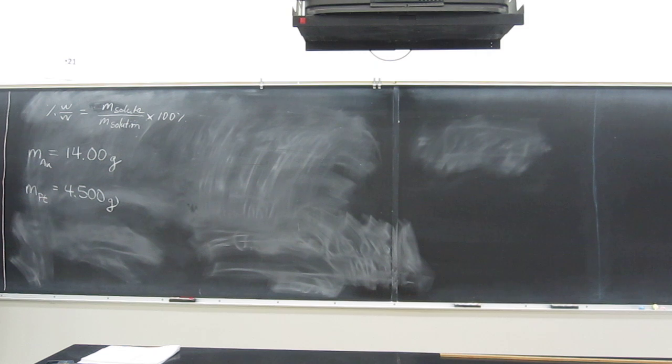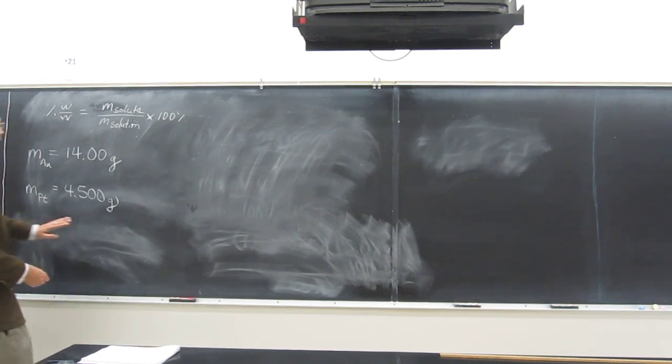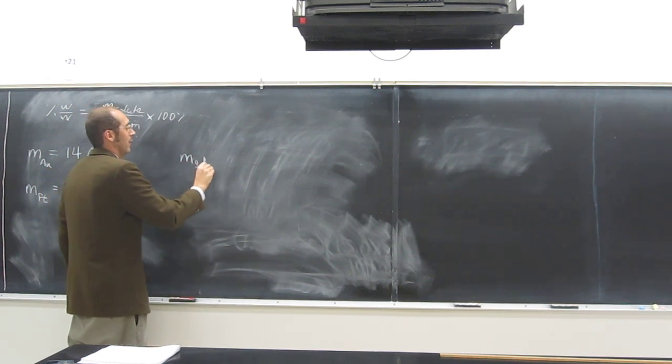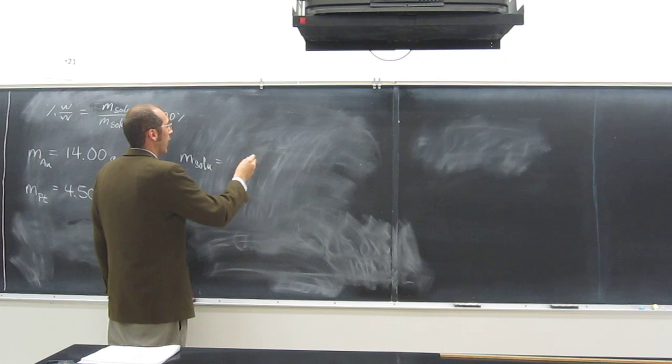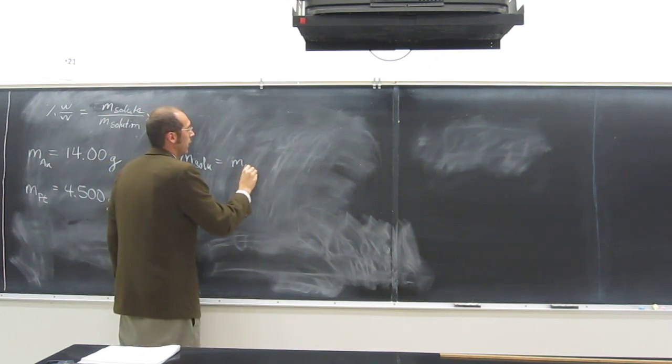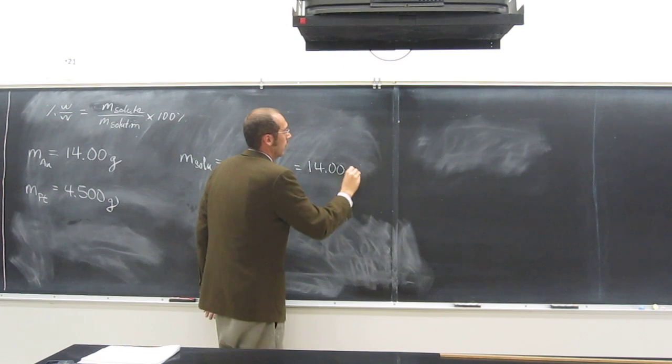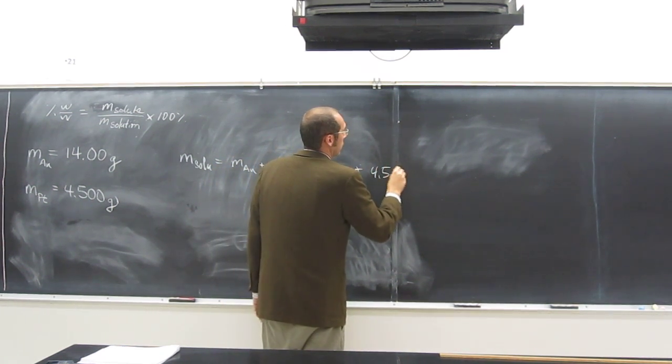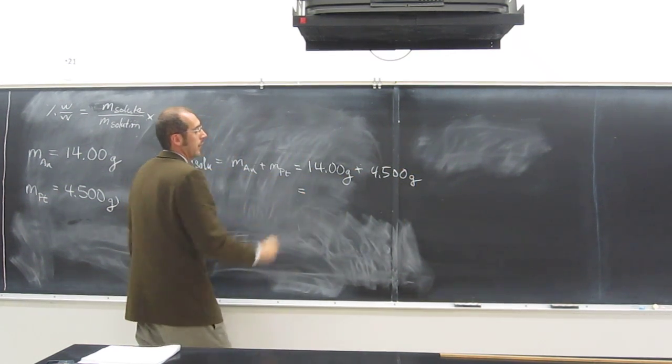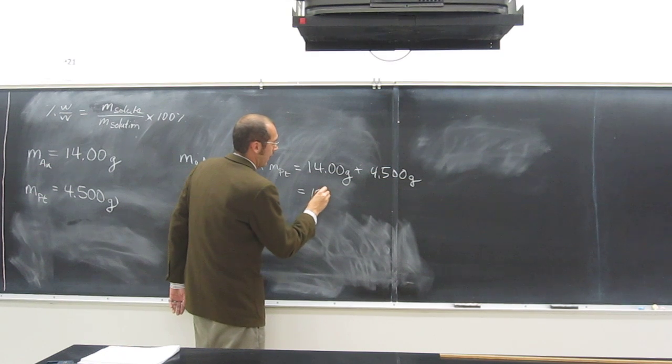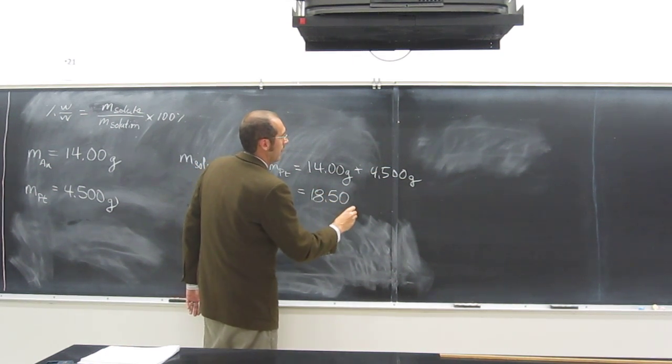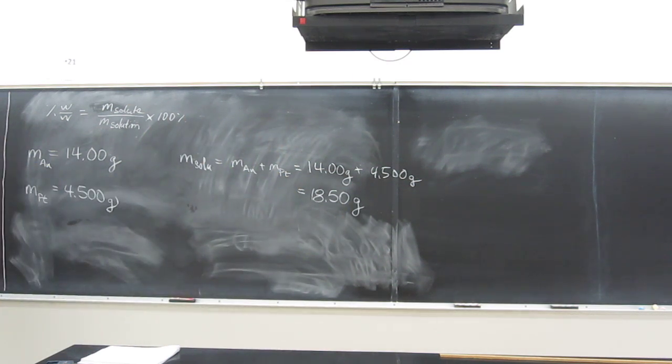So do we know the mass of the solute? Yes. What is it? 4.500 grams. Why do you say that's the solute? Because it's a smaller amount. Okay. So anyways, the mass of the solution is going to be what? How do we figure it out? The mass of gold plus the mass of platinum, right? So it's going to be 14.00 grams - what is it going to be? 18.50. That's it? Yeah. Okay, good. That's the solution.